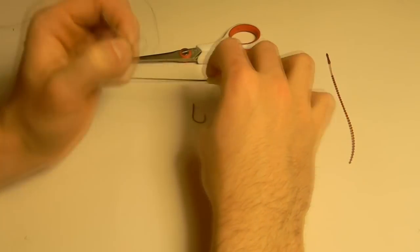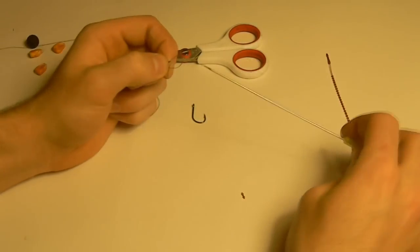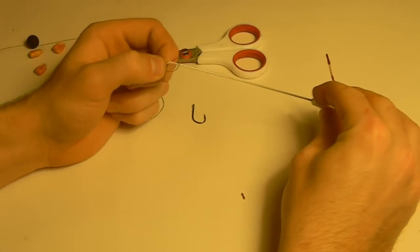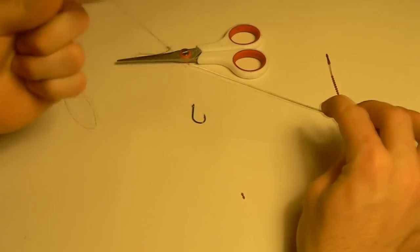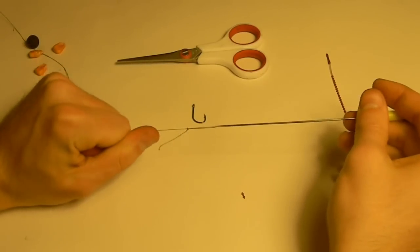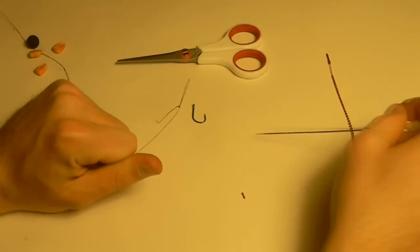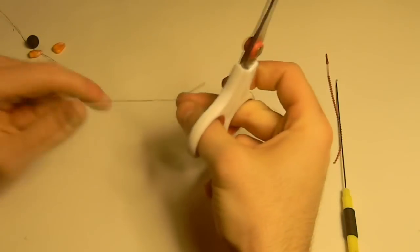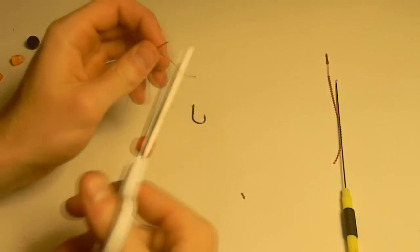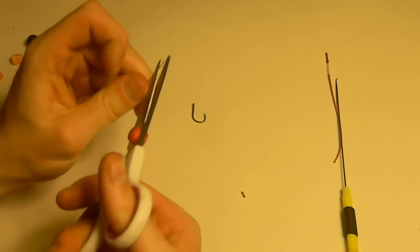Next, you're going to take your baiting needle. You're going to go through the back of the loop, grab the circle, and pull the circle through the loop so that it makes a loop on the end of your line. Then, you're going to take your scissors and trim off just the little bit of extra line that you have here.